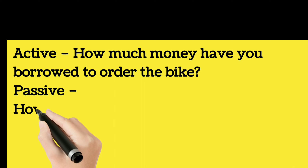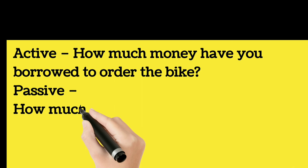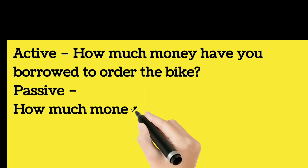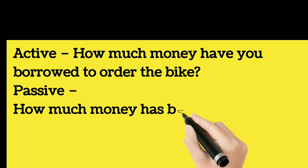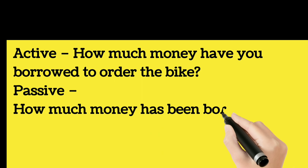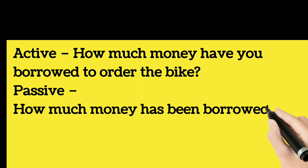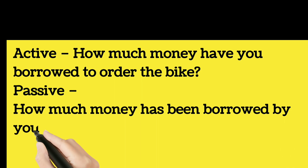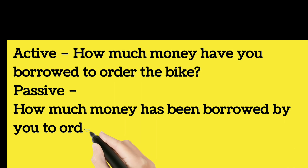Active: how much money have you borrowed to order the bike? Passive: how much money has been borrowed by you to order the bike?